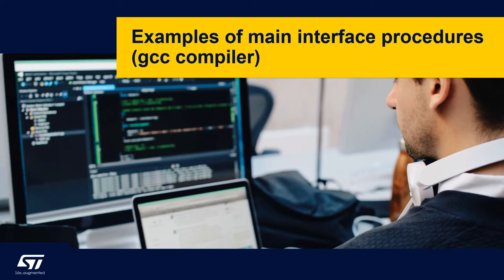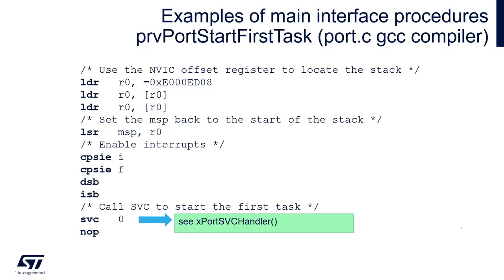Some examples of main interface procedures for GCC compiler. Let's have a closer look at the startup procedure of FreeRTOS. We will analyze the vPortStartFirstTask function within the port.c file, prepared for GCC compiler and STM32L476 platform.